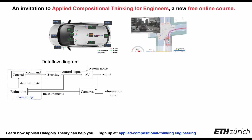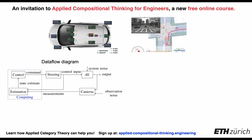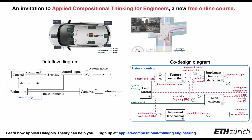For example, categories can describe data flow representations which illustrate which component communicates with which and their interfaces. This kind of diagrams, however, does not capture the why.